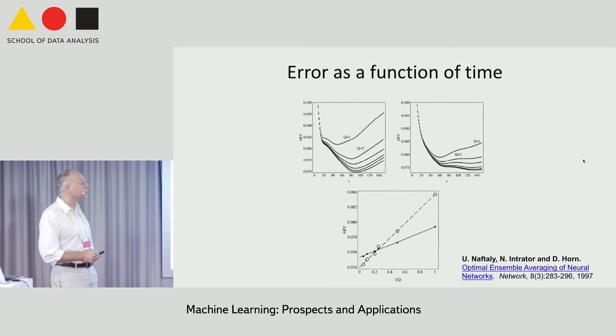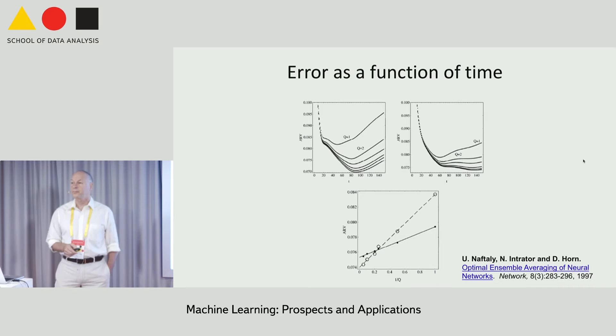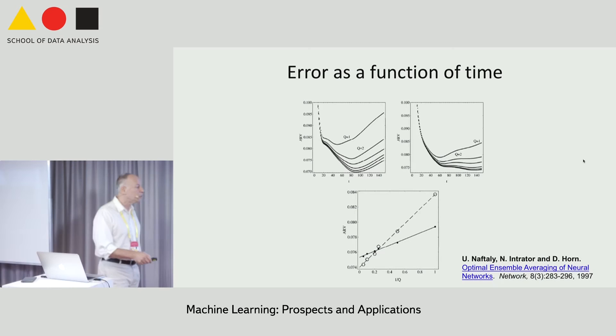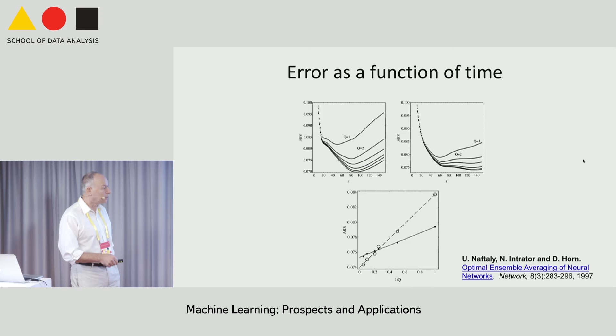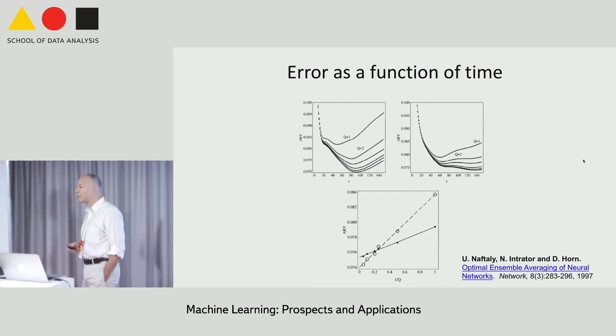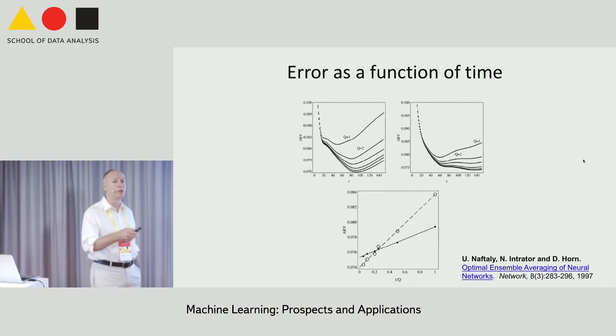If you take the minimum point of each of these experts and put them on a graph, you get a straight line — just as the equation from the previous slide predicted. This axis is 1 over Q, so 1 is here, and as Q becomes large we move close to 0. The slope is really what matters: when the slope of this architecture is bigger, eventually it will cross and produce a better result. And you don't have to train a lot of networks to determine this — you can just take the first two points, draw the line, and determine which one is going to be better.